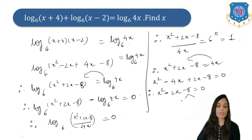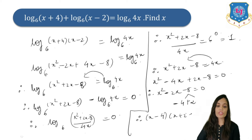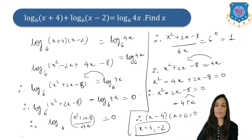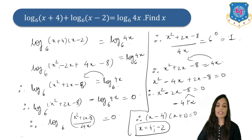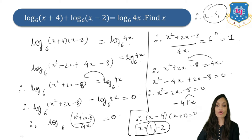Factorizing x² − 2x − 8 gives (x − 4)(x + 2) equals 0, so x equals 4 or x equals −2. However, substituting x = −2 would give log of a negative number, which is undefined. Therefore the only valid answer is x equals 4.